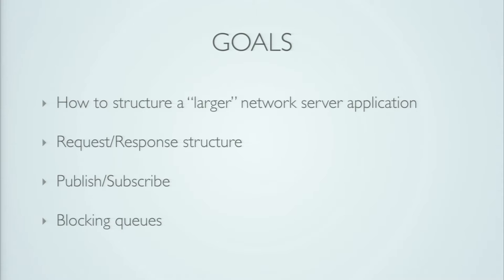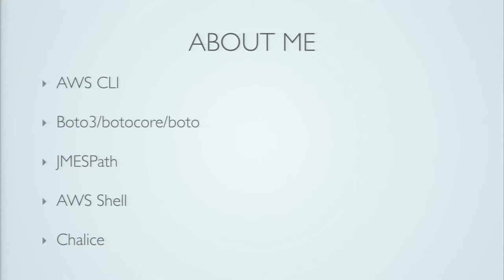Before we dive in, I just want to give a little bit of a disclaimer. I'm not an Async IO expert — as I mentioned, I wanted to learn more about it. I work at AWS, and I primarily work on Python libraries and supporting multiple Python versions. Writing an Async IO network server that only runs on the latest version of Python is not something I would consider myself an expert in. So I'm just a beginner trying to share what I have learned.